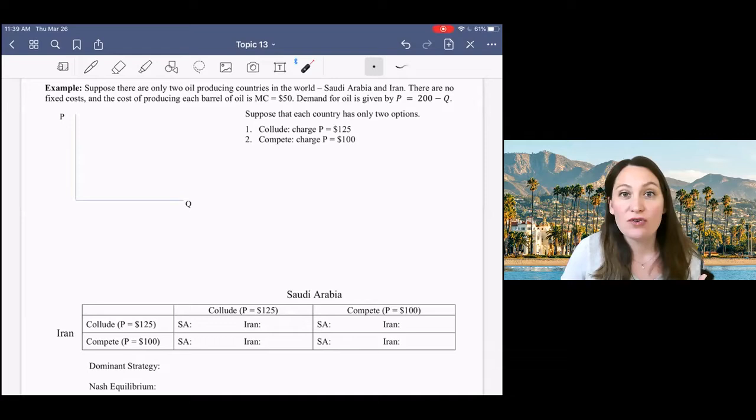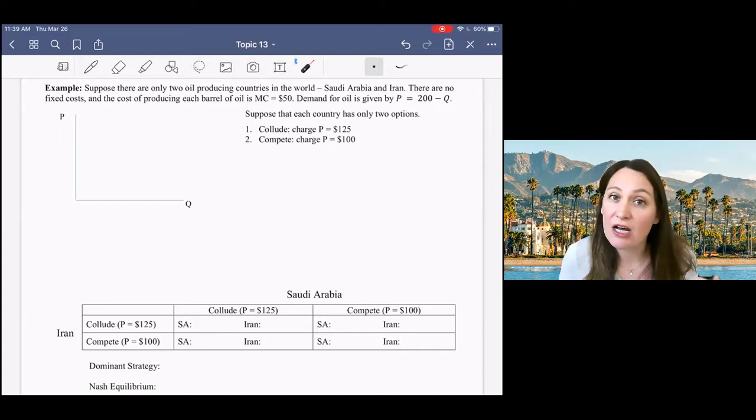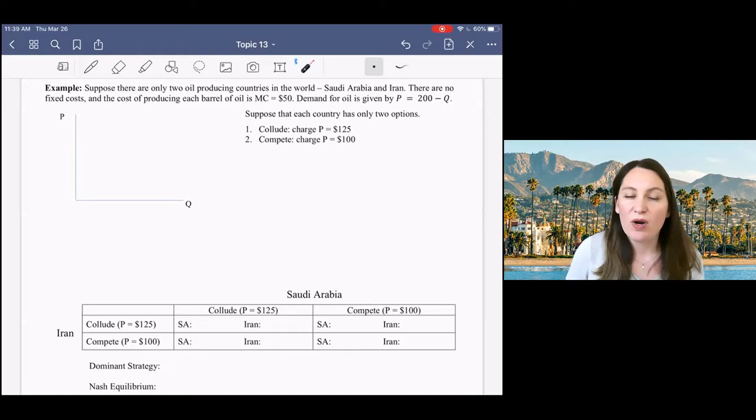In order to do that, they're going to have to restrict quantity, right? Reduce quantity, raise prices like a monopoly. But to understand this type of market, firms basically either have a choice of colluding to behave like a monopoly, or they can compete with each other by lowering their prices, trying to undercut their competitors, and therefore capturing a larger share of the market.